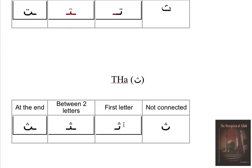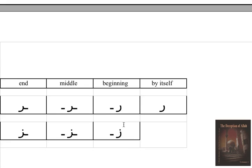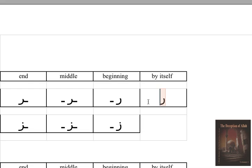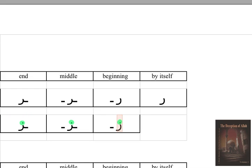Now we will take letter 'ra.' This is letter 'ra.' Letter 'ra' is the same shape as 'za' in writing, but the difference is 'za' has a dot on top. You see the dot here — this is a dot. Letter 'ra' does not have a dot on top; it is plain. Both letters look exactly the same — the only difference is 'za' has a dot on top.